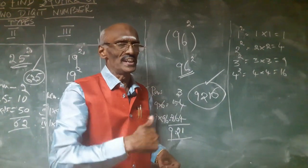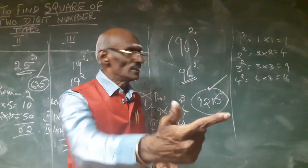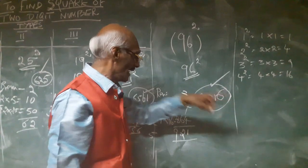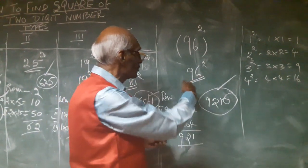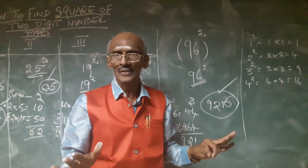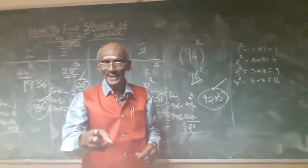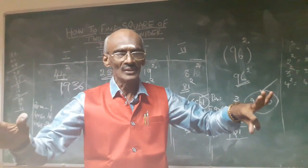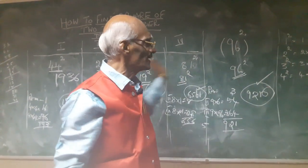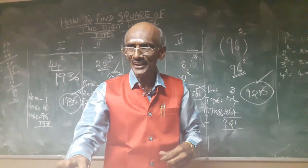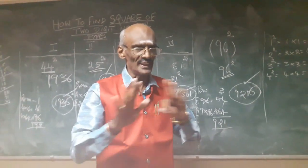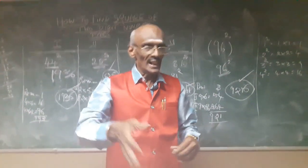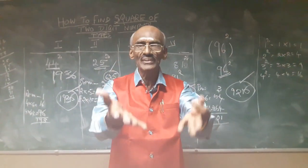Only three steps are followed: square the last digit, multiply the first digit with the second digit, and multiply the first digit with the two-digit number. Within two seconds we can find the square of any two-digit number. You need not worry about the different types — whatever the type may be, no conditions, no assumptions. The only thing is remembering this shortcut method, and this method is a scientific method.